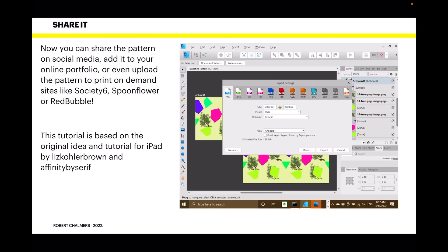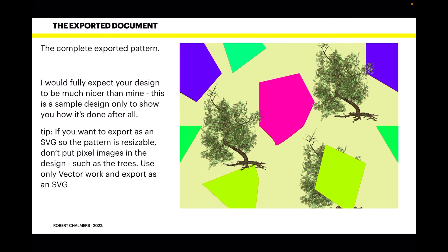You can then share the pattern on social media, add it to your online portfolio, or upload it to print-on-demand sites like Society6, Spoonflower, or Redbubble. This tutorial is based on the original idea and tutorial for iPad by Liz Brown and Affinity by Serif, but this version is for the PC and bears no real relationship to the iPad version. As a tip: if you want to export as an SVG so the pattern is resizable, don't use pixel images — use only vector work, export as SVG, and make sure every layer is converted to curves, as pixel layers won't convert and SVGs are very fussy.